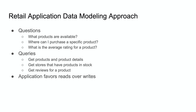I'm going to keep things approachable but give you enough detail so you can gain an understanding of how to model data for a retail application. The questions we're answering today are: what products are available? If you're on a website you want to see a list of products, dive into each one, and ideally purchase it. The next question is: where can I purchase a specific product?